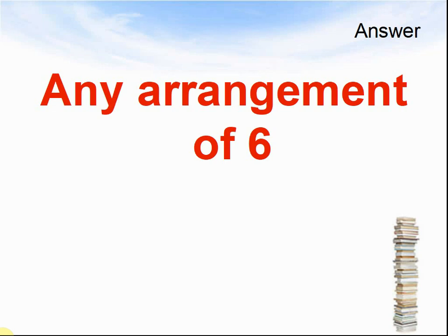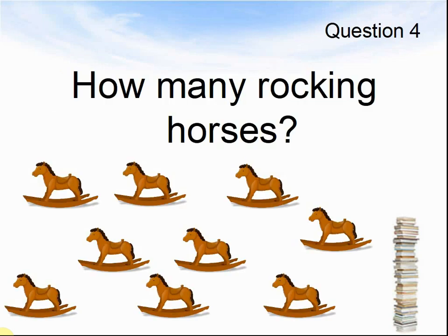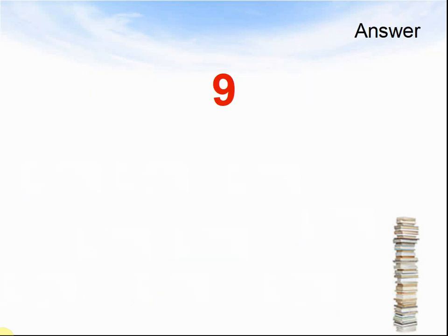Let's look at the next question. Question 4. How many rocking horses can you see? Write down the number. 1, 2, 3, 4, 5, 6, 7, 8, 9.